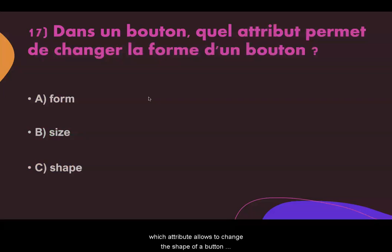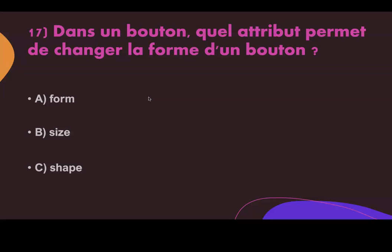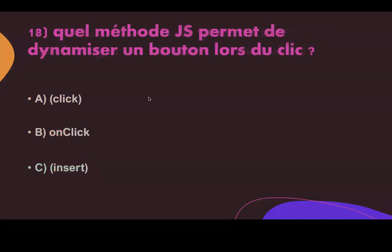Question seventeen. On a button, which attribute allows you to change the shape of a button? Answer A: form. Answer B: size. Answer C: shape. The correct answer is C, shape.